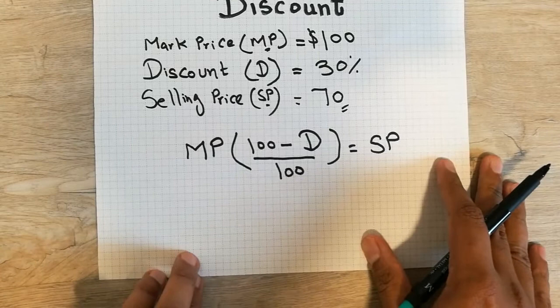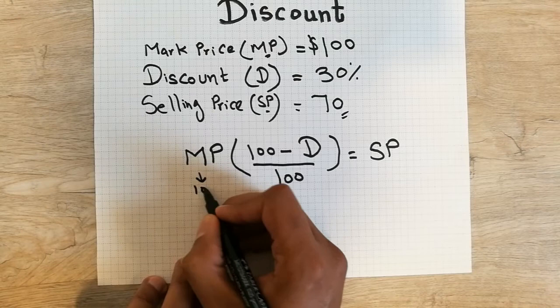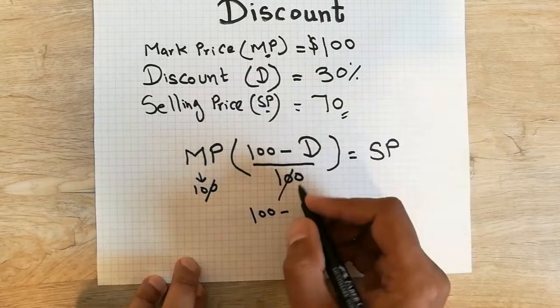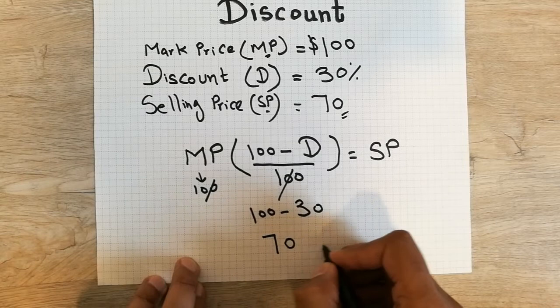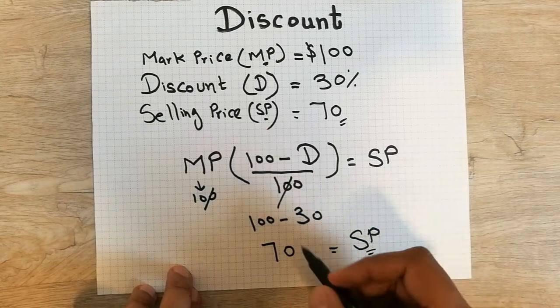Let's put the values into the formula. Mark price is 100, so we cancel the 100 in the numerator with the 100 in the denominator. Discount is 30, so 100 − 30 = 70. Therefore the selling price is 70. This confirms the same answer we calculated before — the selling price after the 30% discount is 70.